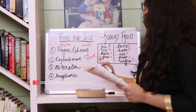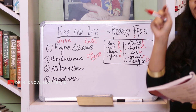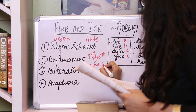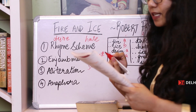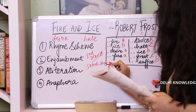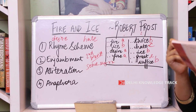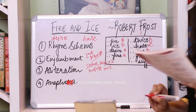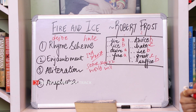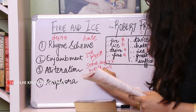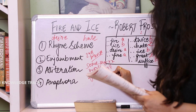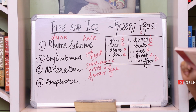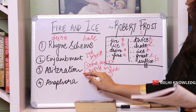Then we have alliteration — when two words begin with the same sound. Searching the poem for examples: 'some say' appears in the first sentence and also in the second sentence, so that's alliteration appearing twice. In the first line, 'world will' is also alliteration. We also have 'those who' and 'favor fire' as additional examples. So there are four examples of alliteration in the poem.